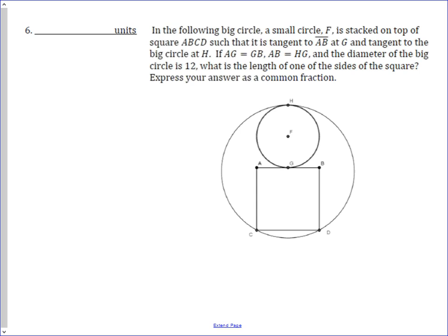The keys are this length right here, HG, is the same as AC, because it says the diameter of the small circle is the same as the square. And then you also know that the radius of the circle is 6, because the diameter is 12, and that's of the big circle.